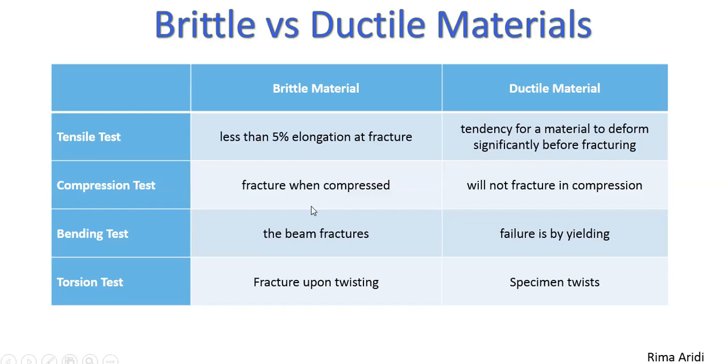In bending tests, the beam fractures. Whereas, in ductile material, the failure is by yielding. You can check my other video about the difference between fracture and failure.